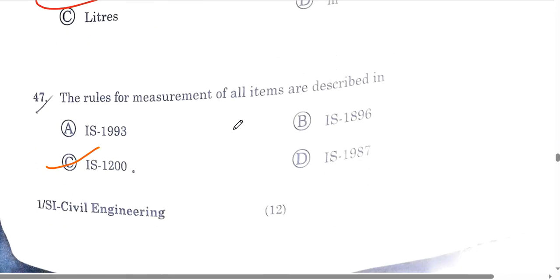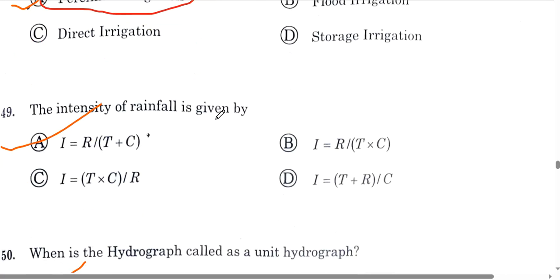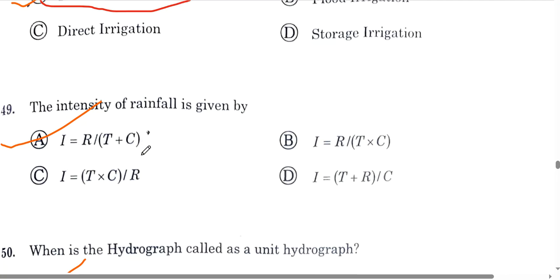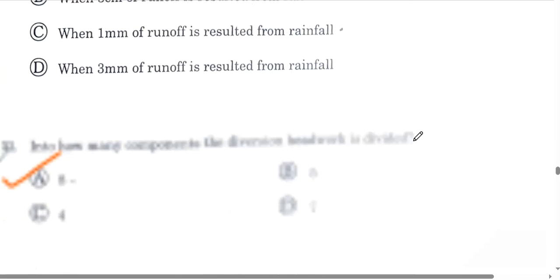Question number 46: plastering is measured in square meters. Question number 47: the rules for measurement of all items are described in IS 1200. Question number 48: when irrigation water is supplied to crops throughout their crop growth, that is perennial irrigation. Question number 49: the intensity of rainfall is given by the formula I = R divided by (T + C). Question number 50: a unit hydrograph is one where one centimeter of runoff results from rainfall. Option is the correct answer.